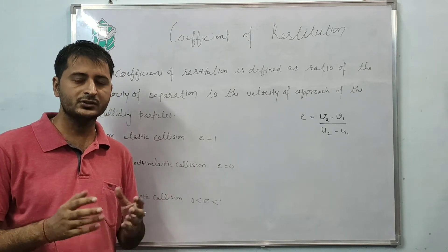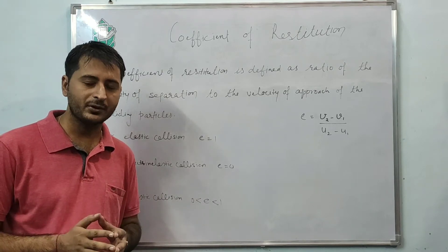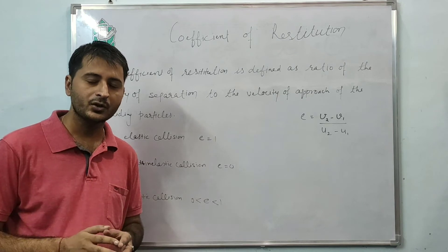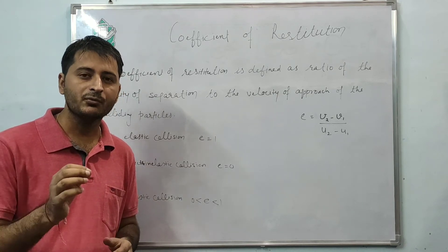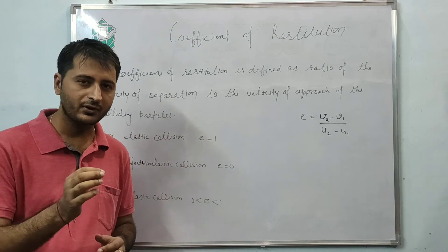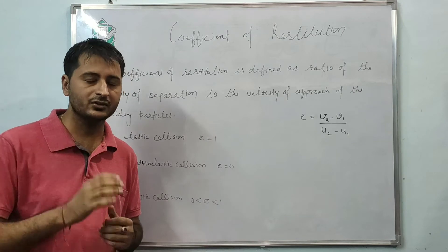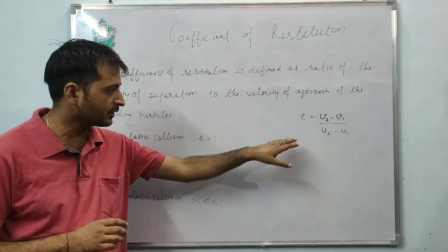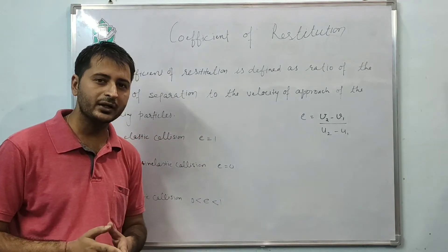Coefficient of restitution is basically the ratio of relative velocity of separation after collision to the relative velocity of approach before the collision. We are going to denote it by small e. Mathematical expression is e equals v2 minus v1 upon u2 minus u1.